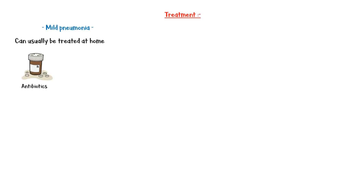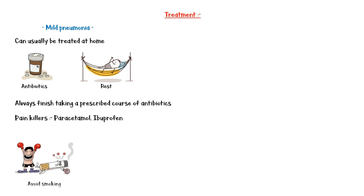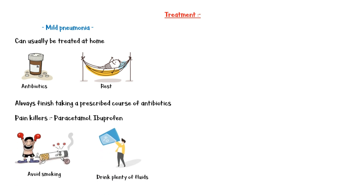Finally, let's discuss the treatment. Mild pneumonia can usually be treated at home with antibiotics and plenty of rest. A patient should always finish taking a prescribed course of antibiotics, even if he or she feels better. In addition to antibiotics, painkillers such as paracetamol and ibuprofen may be given to relieve pain. Patients are also advised to avoid smoking and drink plenty of water to keep hydrated.